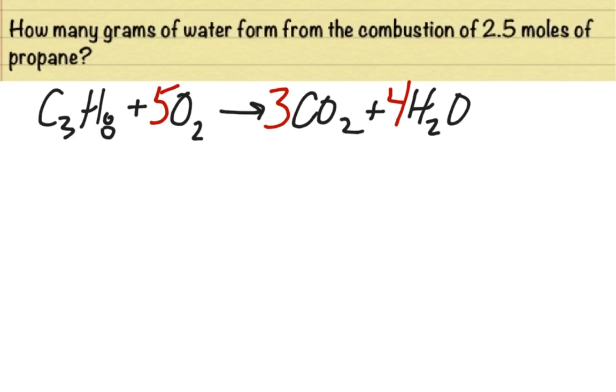So here's a sample problem. We're going to use that same equation we used from the last problem. How many grams of water form from the combustion of 2.5 moles of propane? So again, we have propane C3H8 plus 5O2 yields 3CO2 and 4H2O.